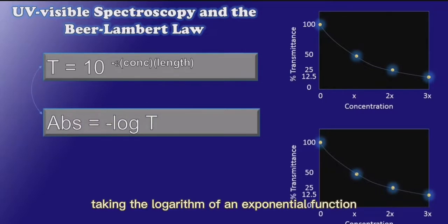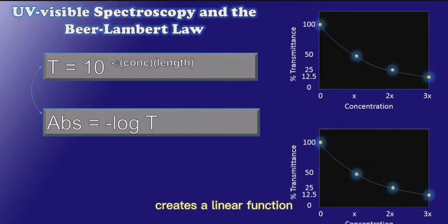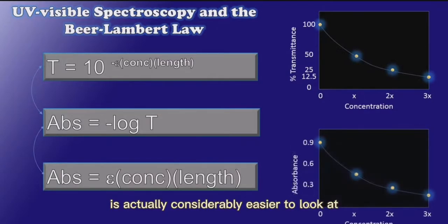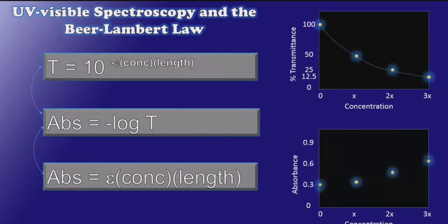Taking the logarithm of an exponential function creates a linear function. And so the data, when plotted as absorbance rather than transmittance, is actually considerably easier to look at.